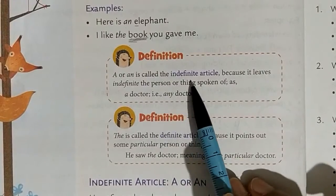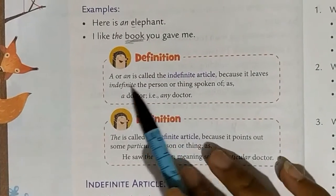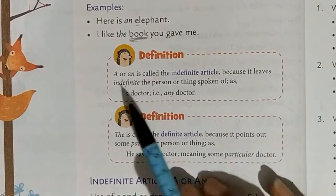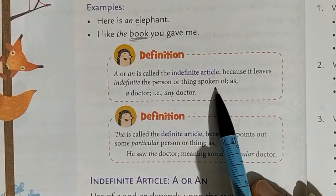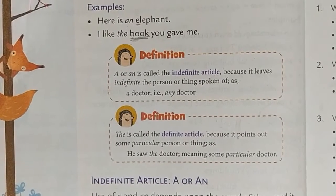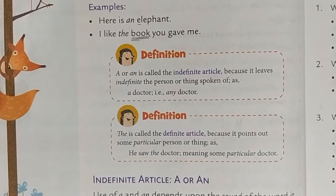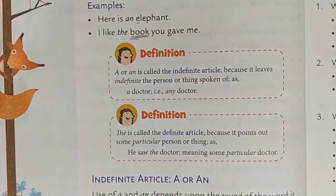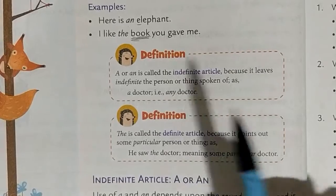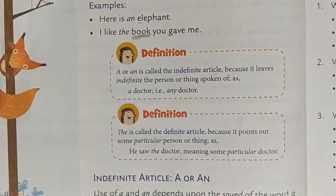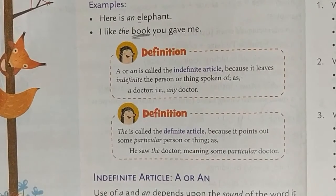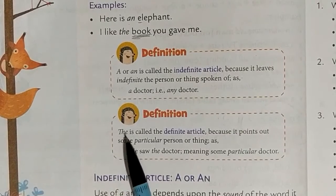'A' or 'an' is called the indefinite article because it leaves indefinite the person or thing spoken of — it is not referring to any particular person or thing. For example, 'a doctor' means any doctor — there is no name mentioned, no gender specified, just any doctor. That's why 'a' is used as an indefinite article.